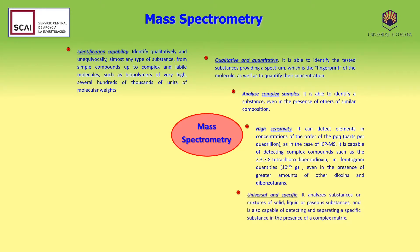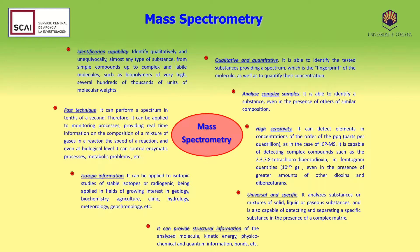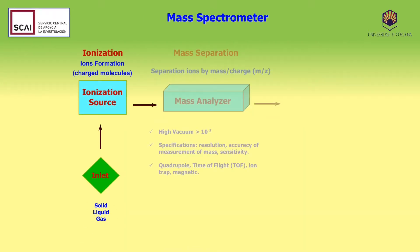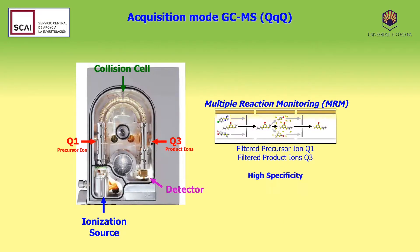Mass spectrometry can analyse complex samples, it has a high sensitivity, it is universal and specific, it provides both structural and isotopic information, and is a rapid technique. Mass spectrometers have three different parts: ions are produced at the ionisation source, then separated in the analyser, and the detector will identify and quantify the ions. The analyser used is a triple quadrupole, and the acquisition mode that we will be using is the MRM, multiple reaction monitoring, which provides a high specificity.